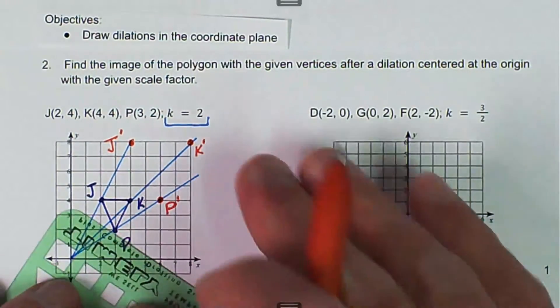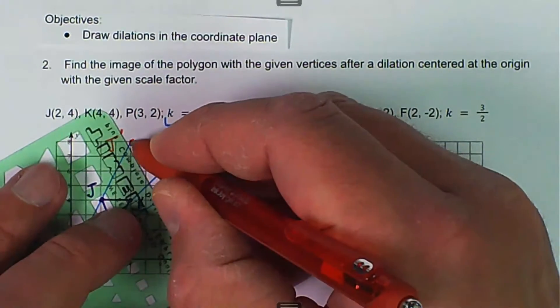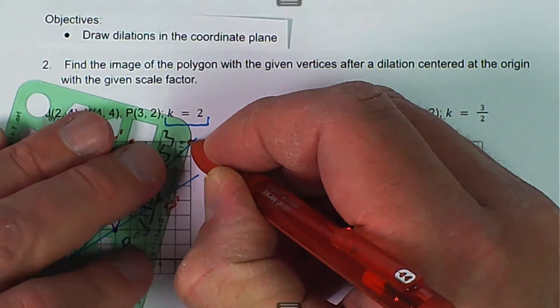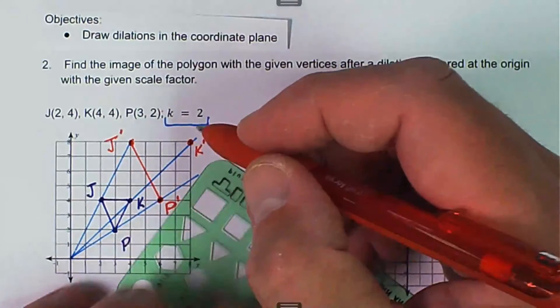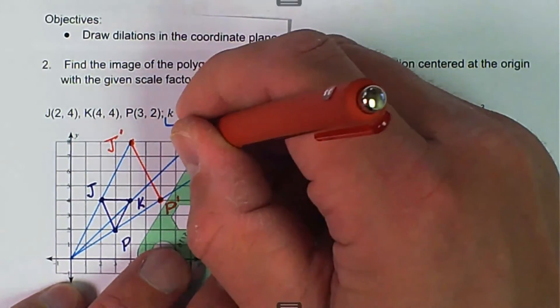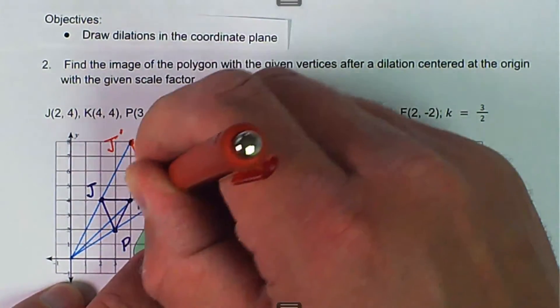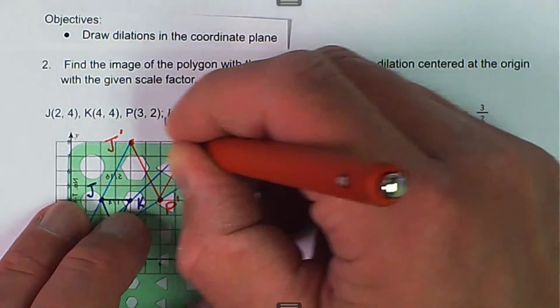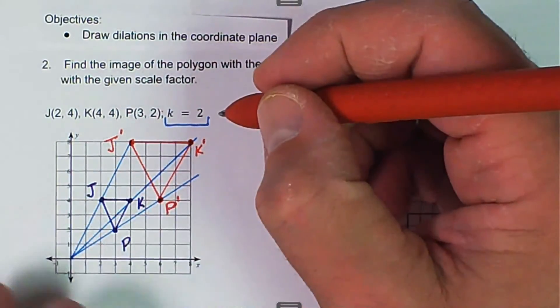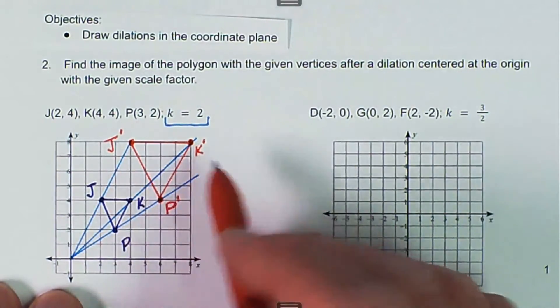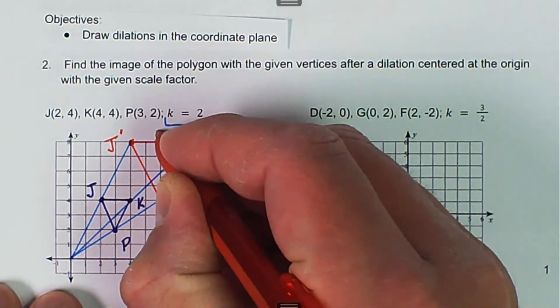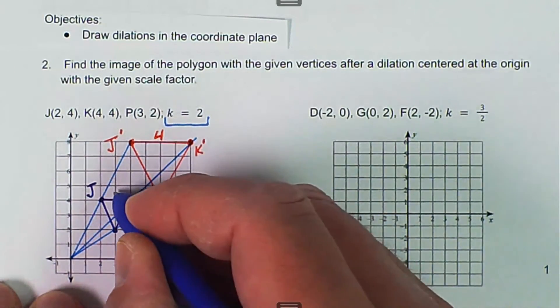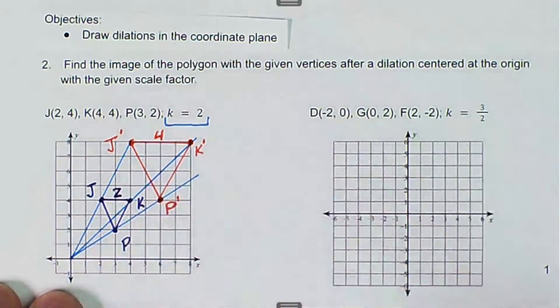And we'll connect those dots. Then we can check if we did it right. The distance from J prime to K prime is 4. And the distance from J to K is 2. So this absolutely is doubled.